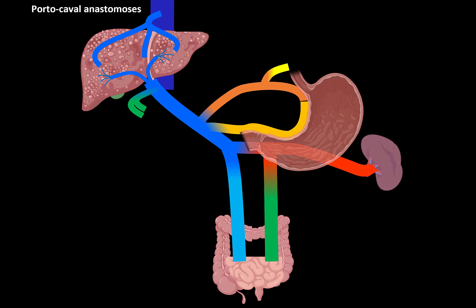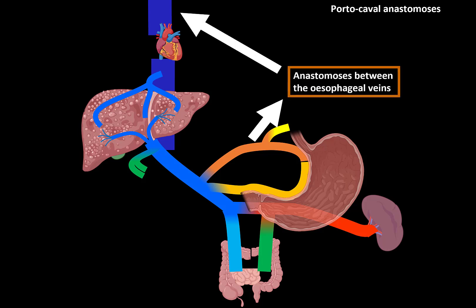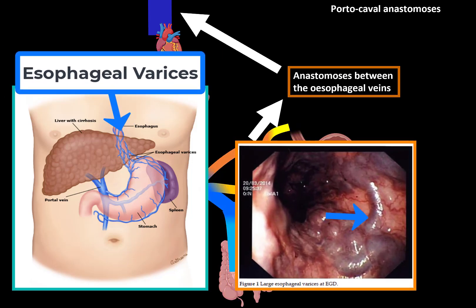Blood flows through the anastomotic veins normally, but if portal pressure increases, these veins become congested, leading to varices or ascites. Through the esophageal veins, blood travels up to the esophagus and anastomoses with the esophageal veins of the azygos and hemi-azygos veins, then flows into the superior vena cava. If portal pressure is increased, these veins become congested with blood, leading to esophageal varices, which can be seen during an upper endoscopy.